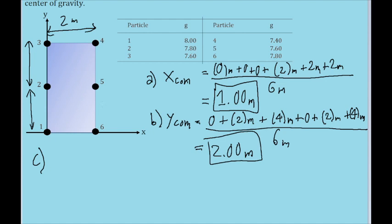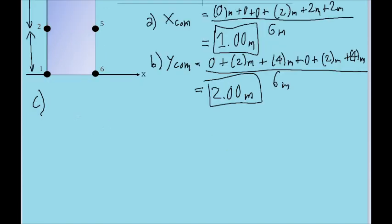Now fortunately, the formula for center of gravity is almost identical to the formula for center of mass, except the difference is that each m value is multiplied by the g value for that mass. So the formula then, for the x center of gravity, x-COG, is going to be equal to the formula for it is going to be like...